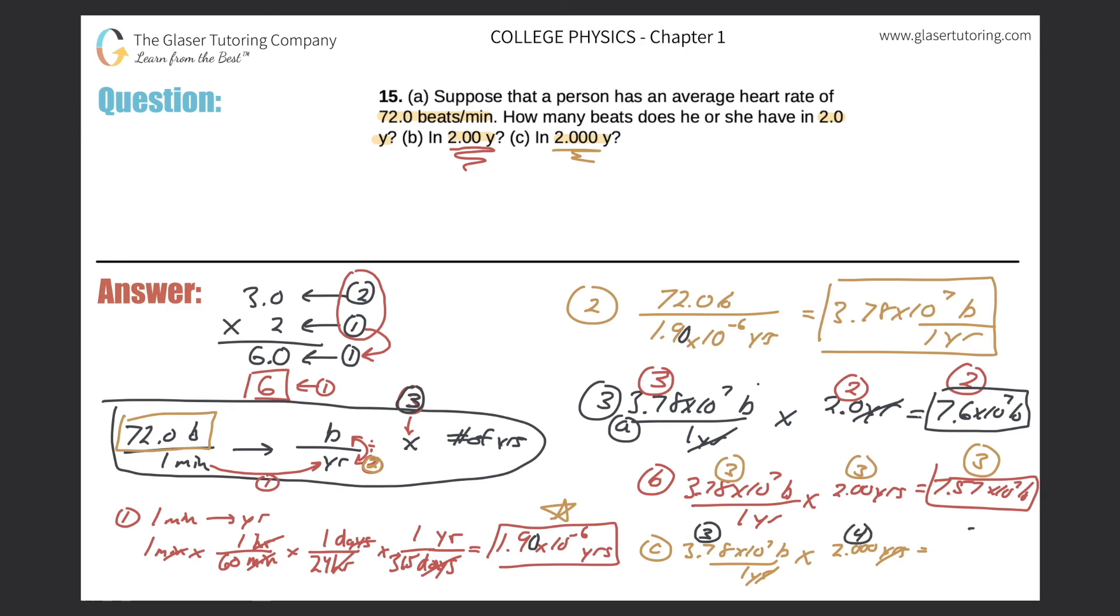Make sure you go back and analyze the number of sig figs. This number has three, this number has four. Therefore, my answer can only have three. So guess what, it's actually going to be the same value as letter b: 7.57 times 10 to the 7 beats. That would be the final answer for c. Remember guys, if this helps you out at all, please do subscribe. Thank you.